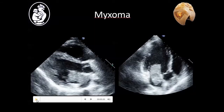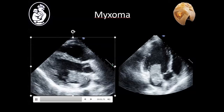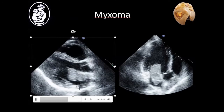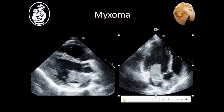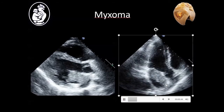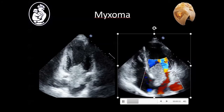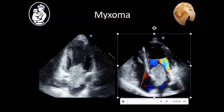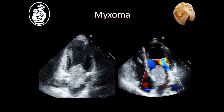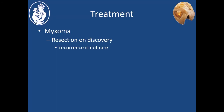This echocardiogram in a patient with a myxoma shows it arising from the atrial septum and prolapsing through the mitral valve. In an apical view, the myxoma comes from the atrial septum and prolapses through into the mitral valve. With color Doppler, there is mild inflow obstruction from the tumor into the left ventricle. Treatment for myxomas is simply resection on discovery. Recurrence is not rare, particularly if the base of the tumor is not completely resected from the atrial wall.